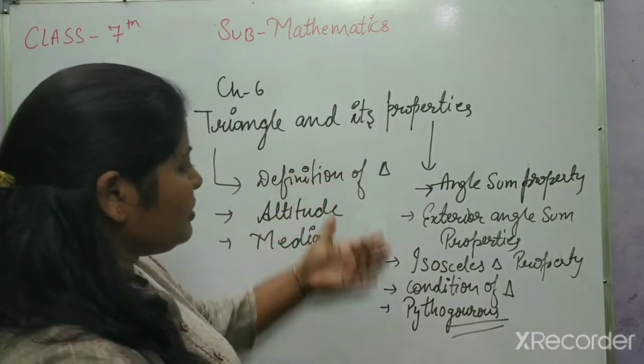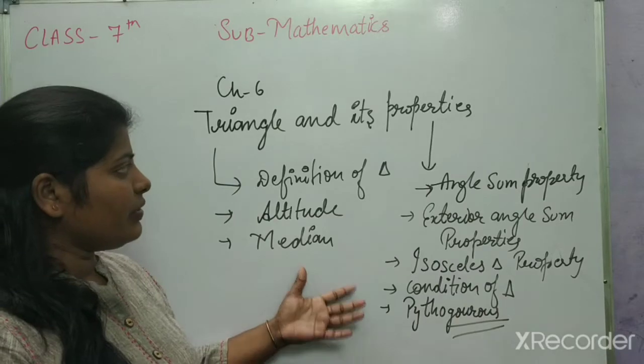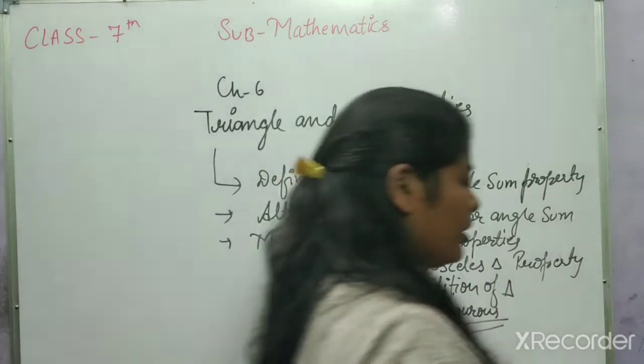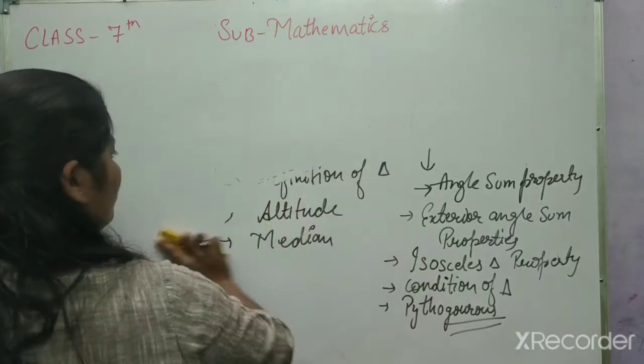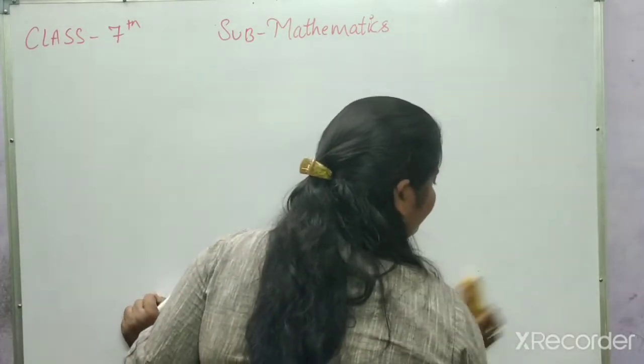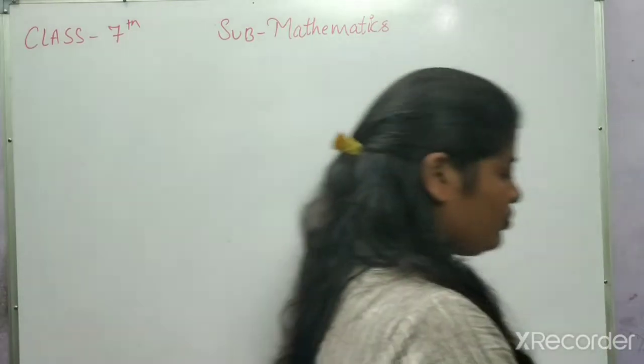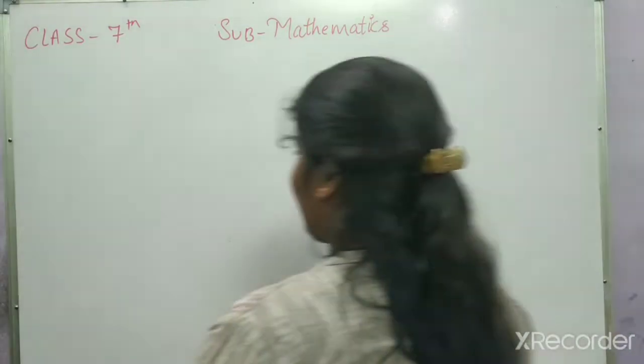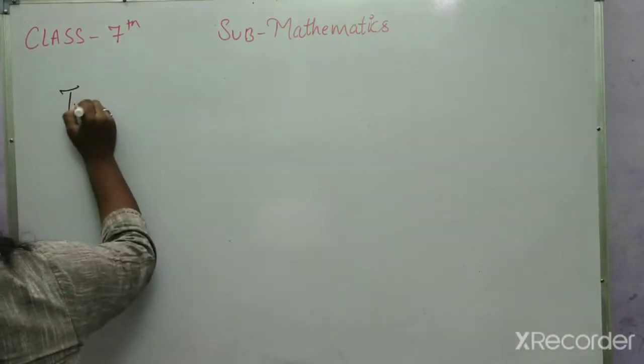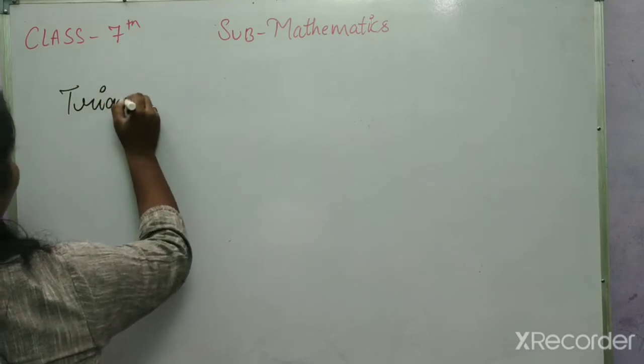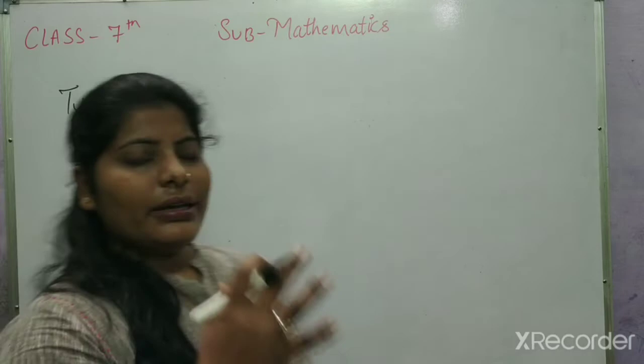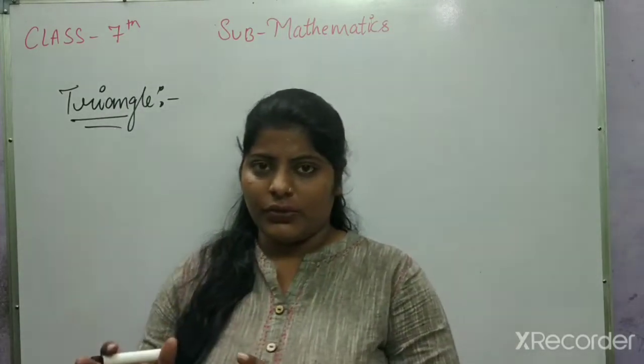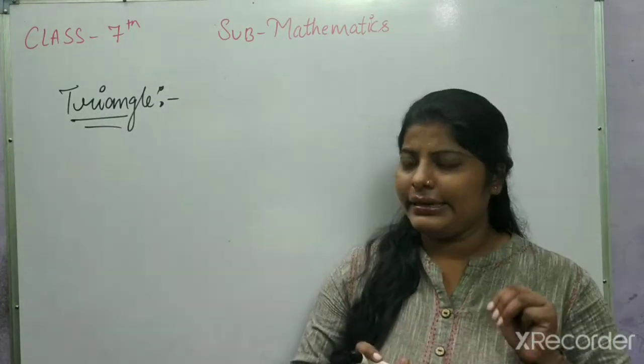In this chapter, we learn about these points. These are keywords, a mind map. So, let's start from the definition. What is the definition of a Triangle? A Triangle is a simple closed curve, which is made up of three sides.